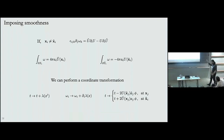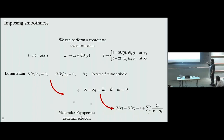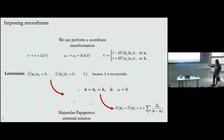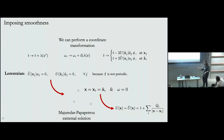There are two cases. In the Lorentzian case, t is not periodic but φ is periodic, and the periodicity of φ would tell me that after this coordinate transformation t should also be periodic — that's illegal. So the only solution in the Lorentzian case is that Ũ_i·a = 0, meaning either the trivial solution (flat space) or centers and anti-centers coincide. Those solutions have U equal to Ũ, which is precisely what people call the Majumdar-Papapetrou extremal solution — it has only an electric field and no magnetic field.